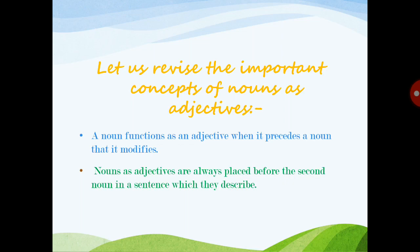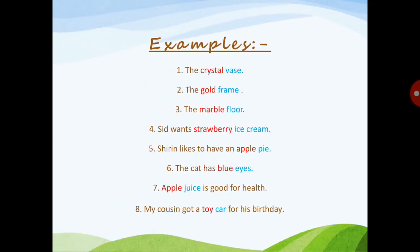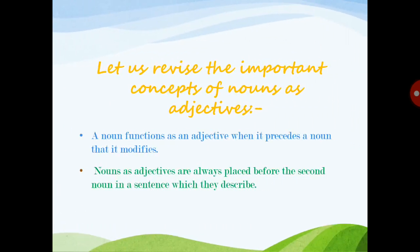For example, 'crystal vase' — there are two nouns, and the first noun 'crystal' comes just before the second noun 'vase,' so 'crystal' acts as an adjective for the noun 'vase.' Both concepts are now clear: a noun functions as an adjective when it precedes the noun it modifies, and nouns as adjectives are always placed before the second noun they describe.